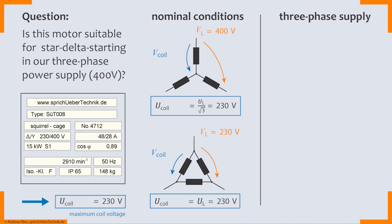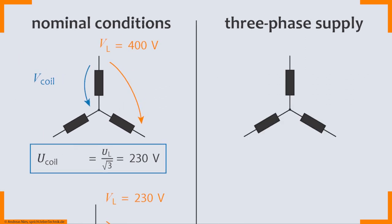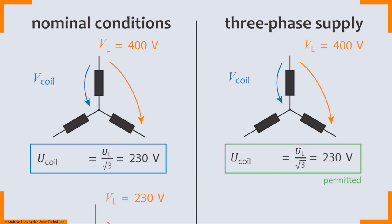Our next step is to look at it in the context of the power supply. German public power supply is three-phase AC with face-to-face voltage of 400 volts. For star connection this would result in a coil voltage of 230 volts. And that is the nominal conditions we figured out earlier, as you can still see here on the left hand side. And this would obviously be permitted here. So I could operate this motor without damaging it in the German public power supply with 400 volts face-to-face at 50 hertz grid frequency in star connection.